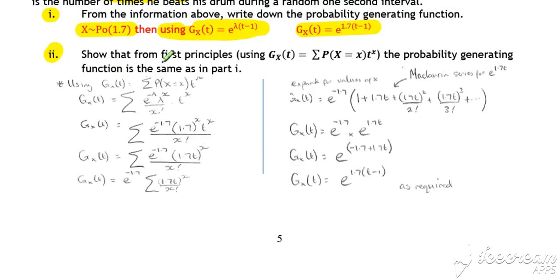But to show from first principles, to kind of derive the result for this particular Poisson distribution, again, we start by using our standard definition of a probability generating function. So, the probability is multiplied by t to the x. And in the case of a Poisson distribution, the probabilities are given by e to the minus lambda lambda to the x all over x factorial.